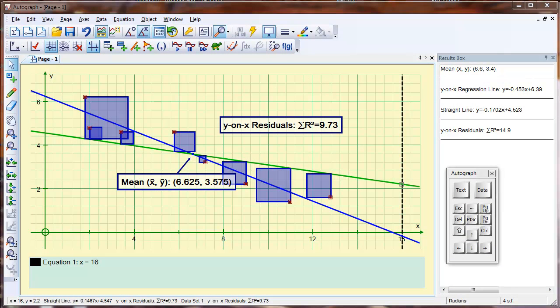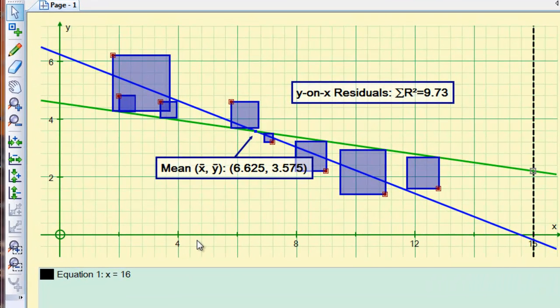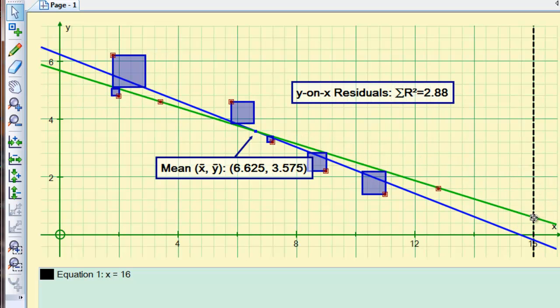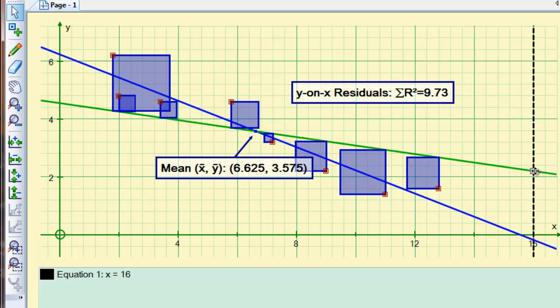This is a video about a simple data set, a simple scatter diagram, its mean, its least squares regression line, and a way that you can illustrate the principles of least squares regression with a random line that's placed through the mean.